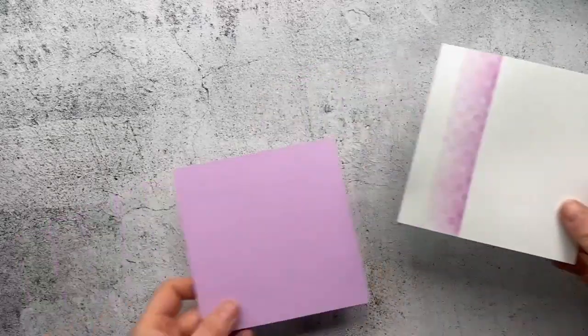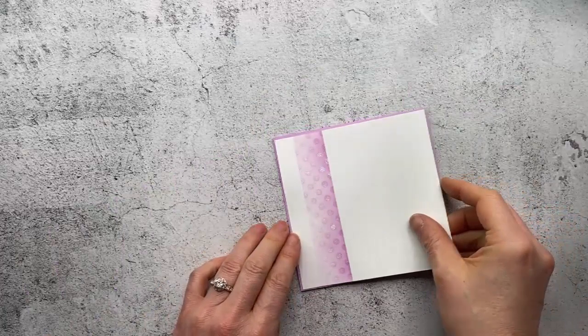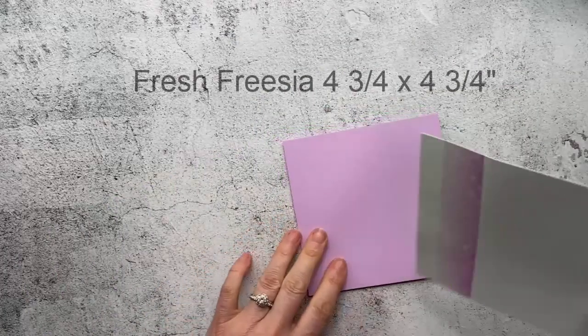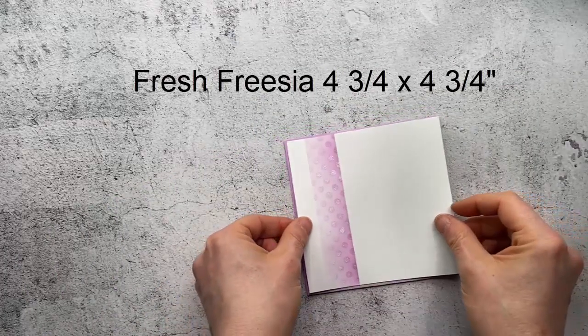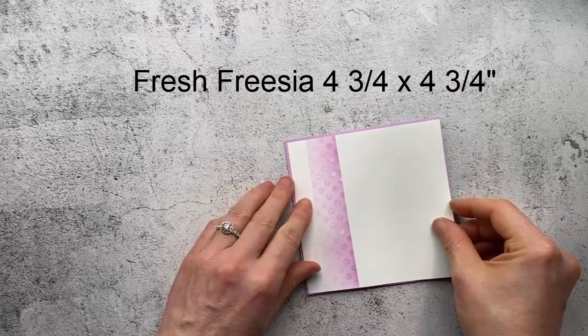Now let's mount that up onto our fresh freesia mat and this mat is approximately four and three quarters by four and three quarters and just squared.